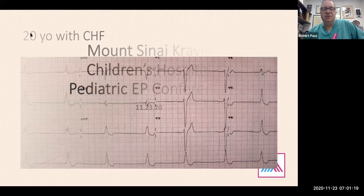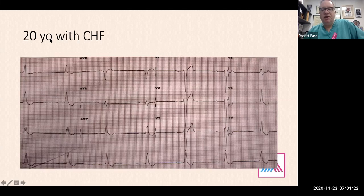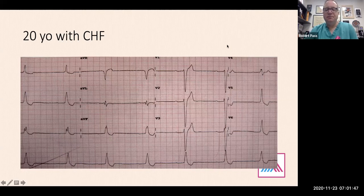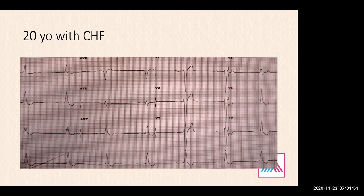This is a 20-year-old with a history of CHF who is on medication for this. Does anybody have thoughts on what could be wrong with this patient? The medicines the patient is on are Lasix, Enalapril, and Digoxin. Dr. Lawalia, do you have any thoughts? I think the PR interval is long and the QRS is wide. The QT looks normal. This could be digoxin toxicity or overdose.